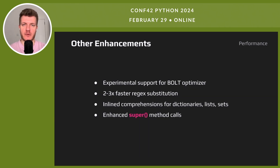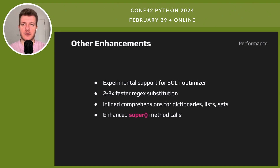Python 3.12 brings a mix of additional performance boosts. The Vault optimizer is now in experimental phase, promising a noticeable increase in speed. Regex substitutions are quicker by two or three times. Comprehensions for common collections are more efficient, and calls to the super() method are now faster.